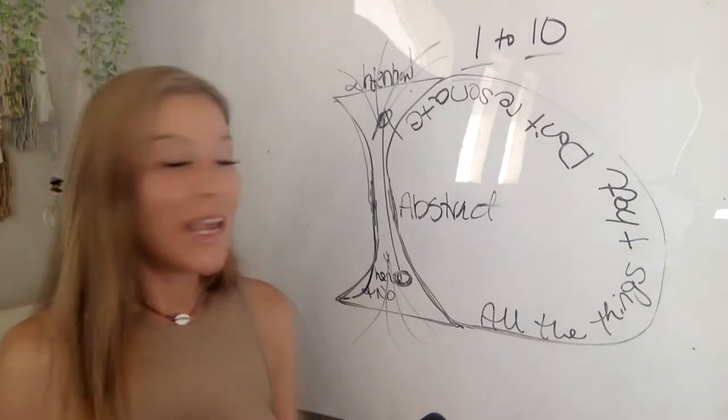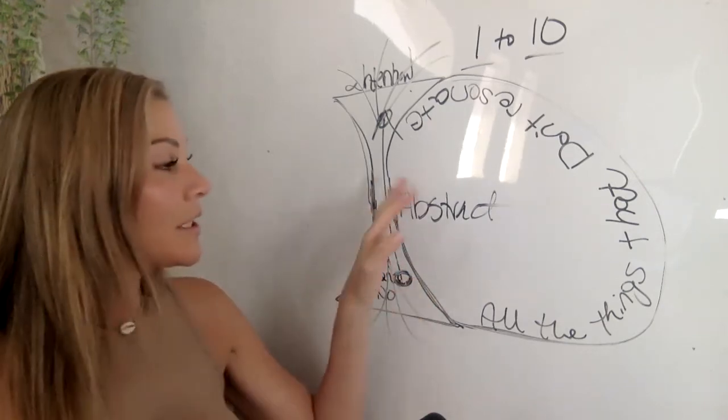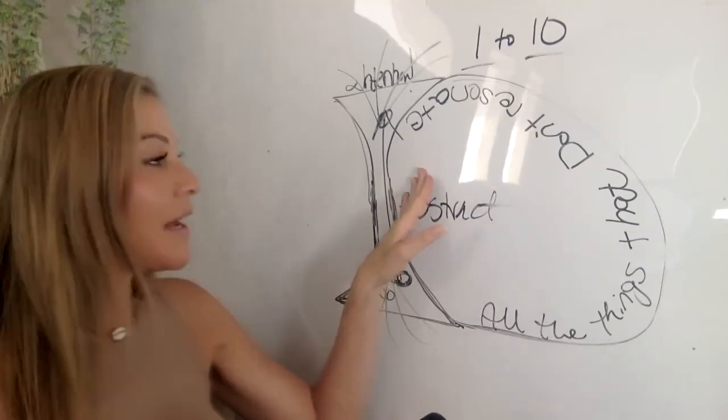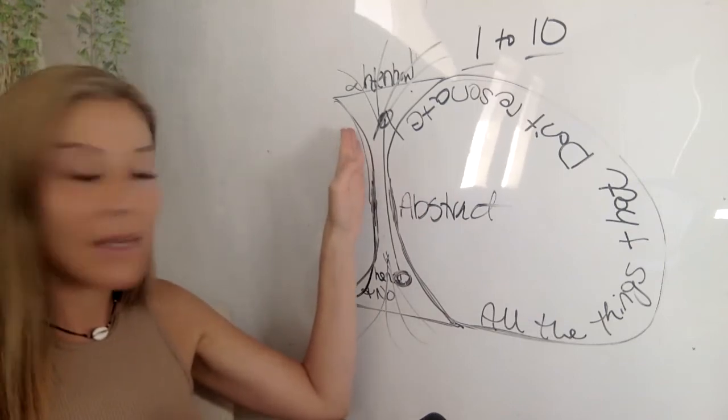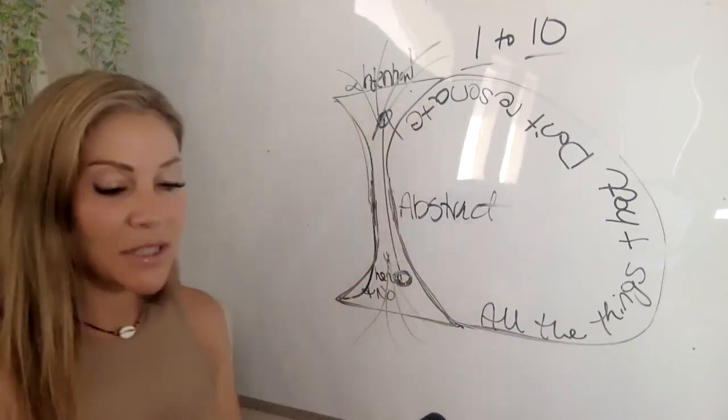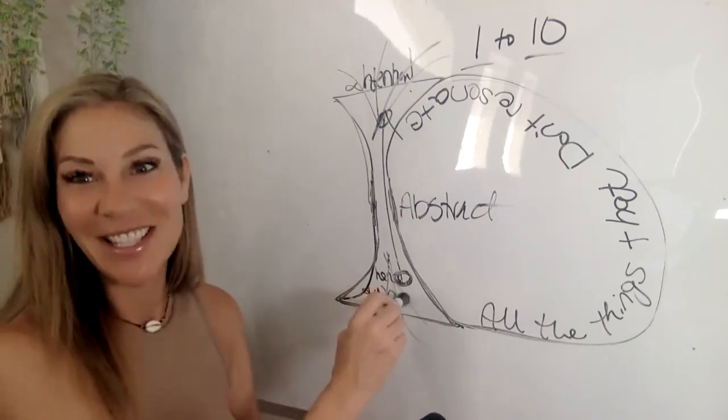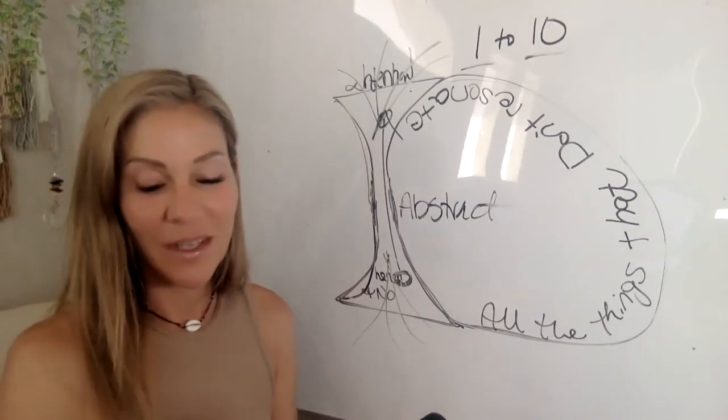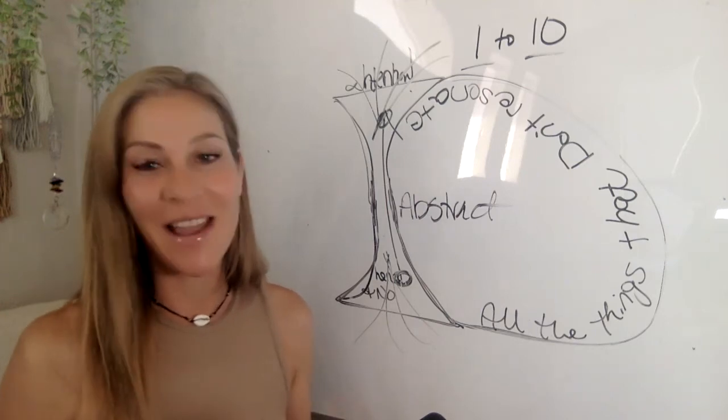This right here is the one to ten method. It is the ability to recognize where you are, hold an energetic pattern in the abstract frequency, and I'll do another video on that, and be able to move into the frequency of what you're becoming by holding abstract frequency that connects these two black holes together, creates a wormhole, and literally takes you from this reality to this one. One to ten, you guys, one to ten.